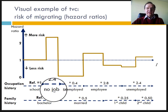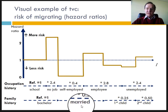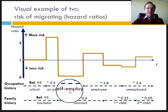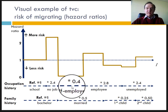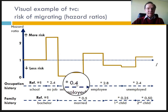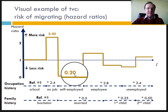It turns out that at the end of this unemployment, she married at the same time that she started a period of self-employment. These two status changes reduced her risk of migration by 50% and by 60% respectively. In total, this is equivalent to a reduction of 80%, or a division by 5, as compared to the reference category.